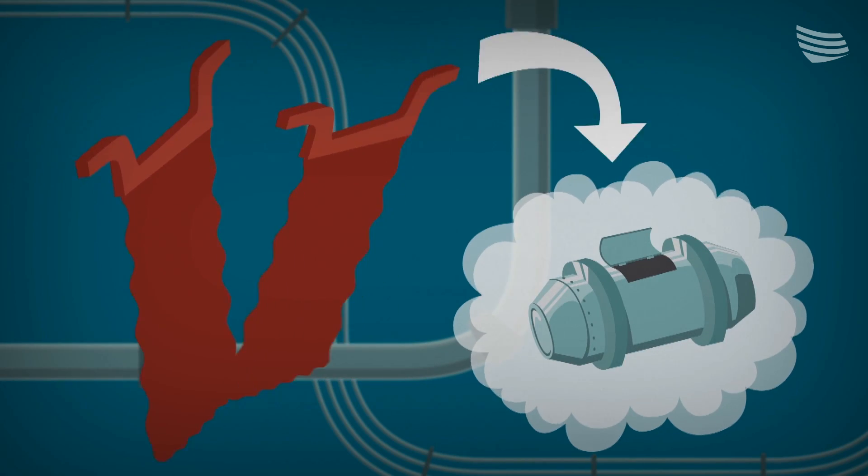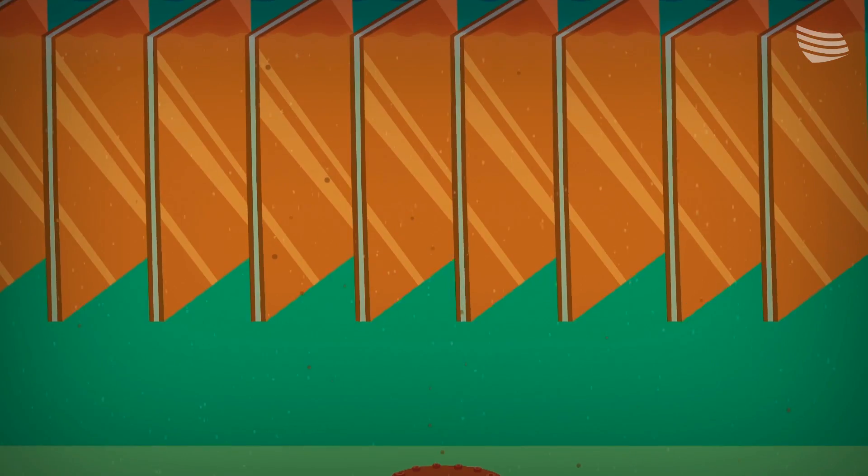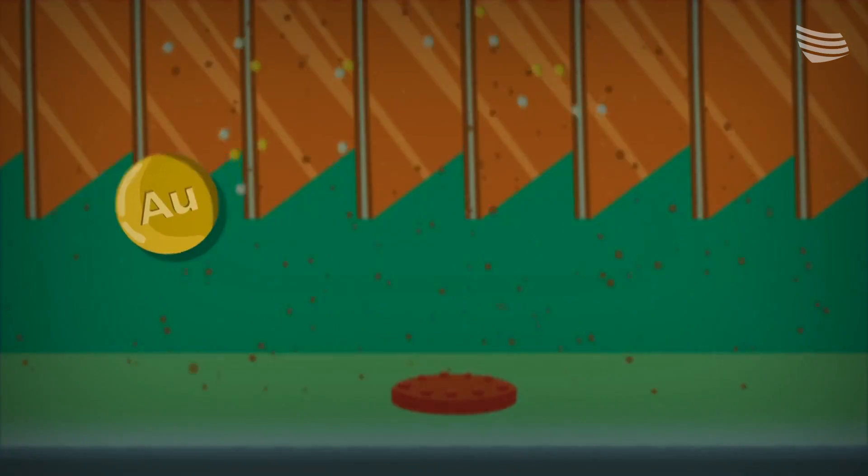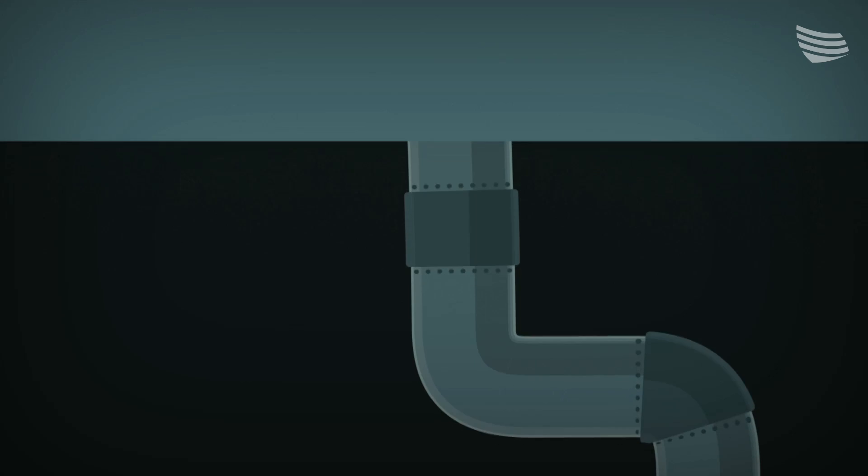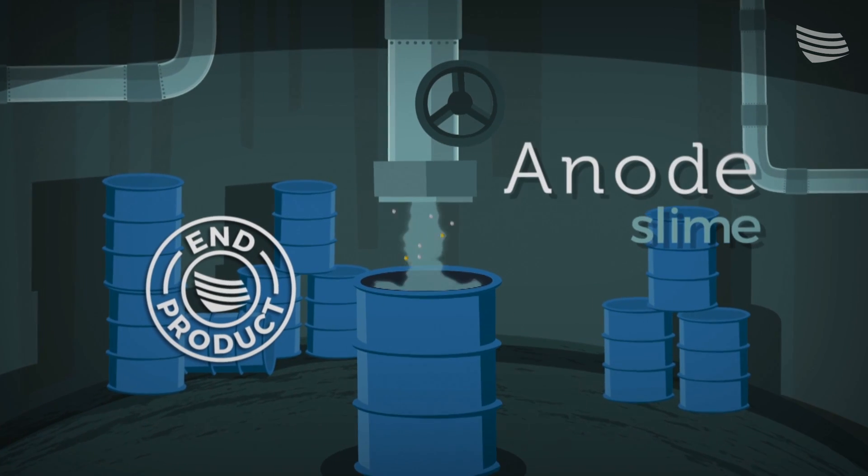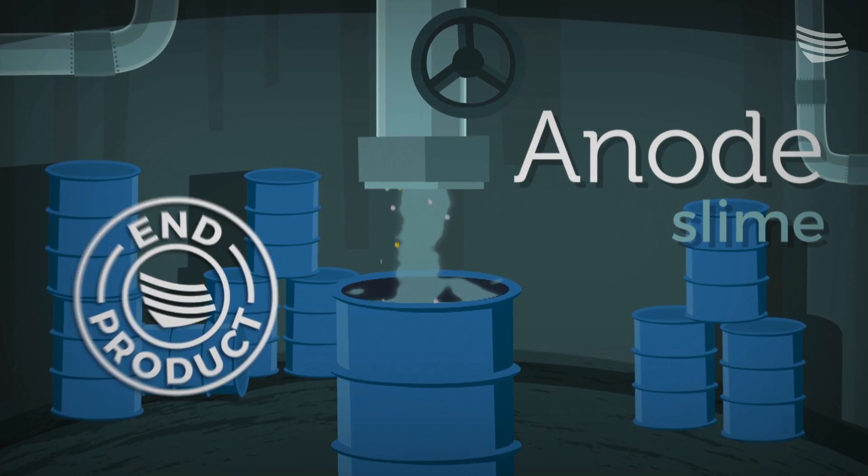All that is left of each spent anode is a thin plaque of copper which goes back into the converter where it is recycled. The slime that settles at the bottom of the tank turns out to have large quantities of gold and silver which we recover and sell. We put the slime into drums and we now have another end product, anode slime which we sell to other refineries.